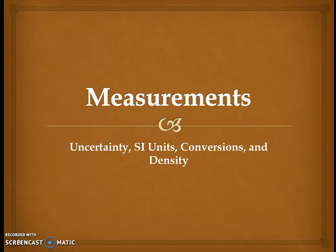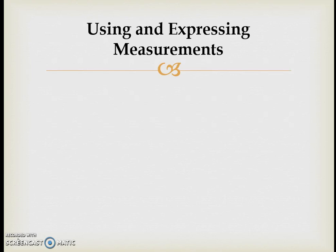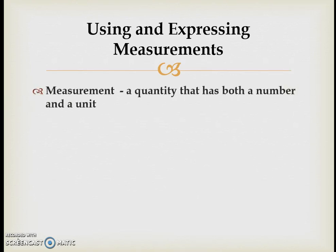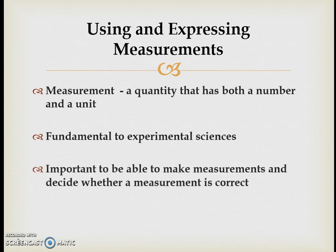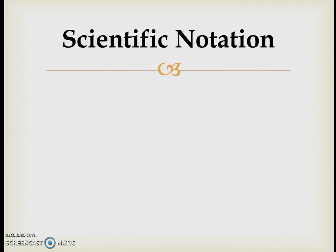In this video we take a look at measurements, the uncertainty that exists within them, SI units, the conversions between different units, and density. Measurement involves a quantity and a unit — having just a quantity doesn't really give any purpose to that measurement unless there's a unit attached to it. Measurements are a fundamental piece of the experimental sciences, as most experiments involve taking some sort of measurement to present as data.